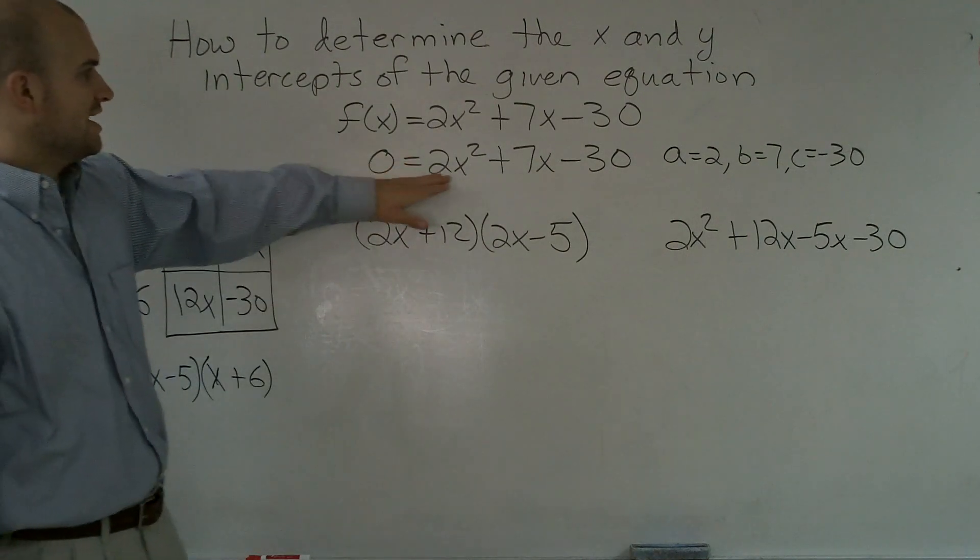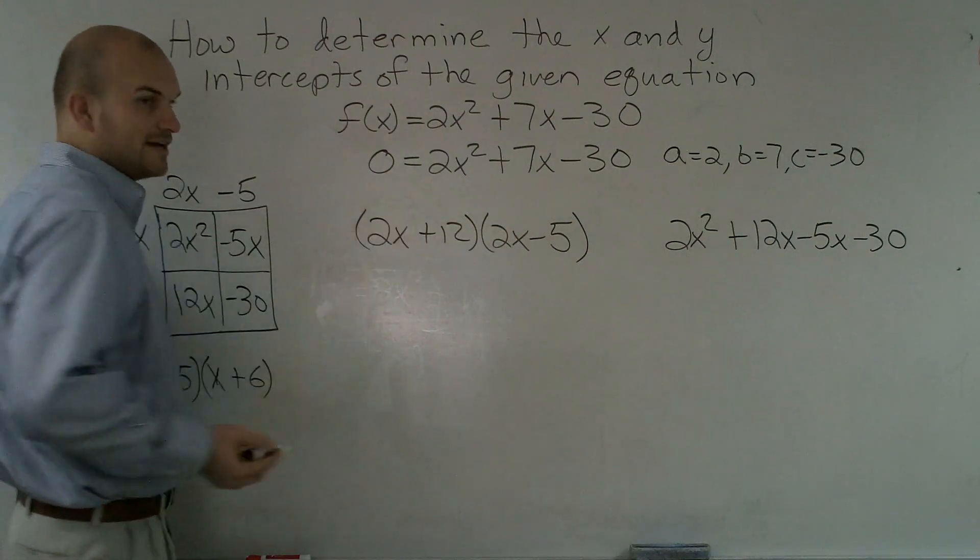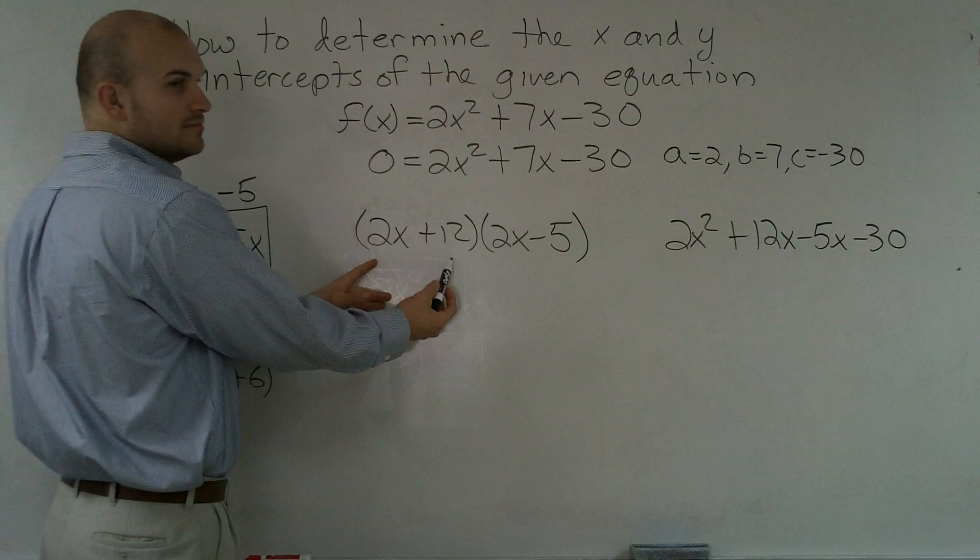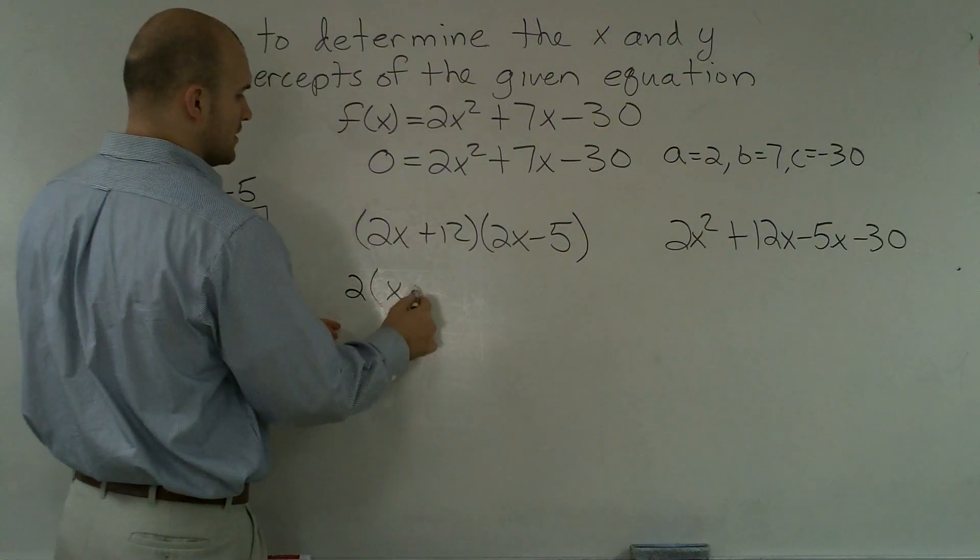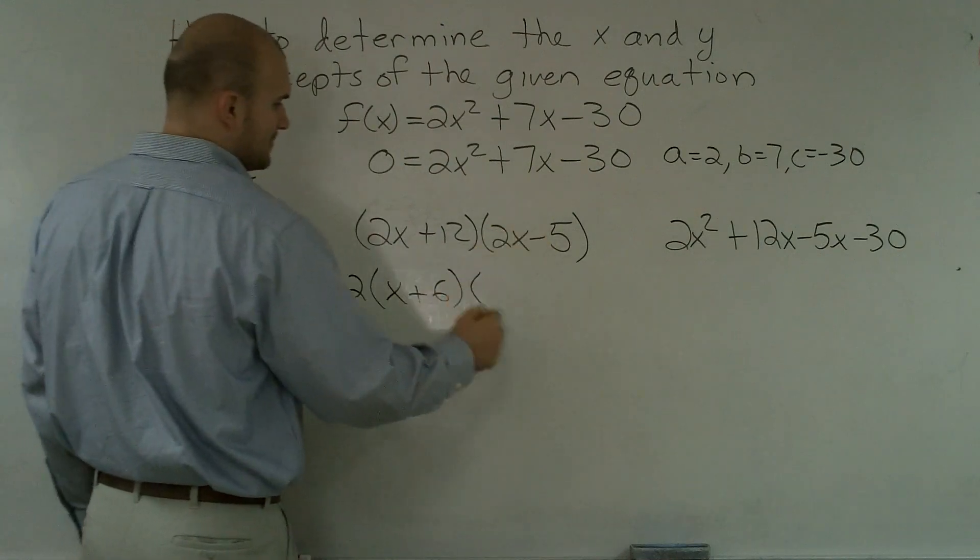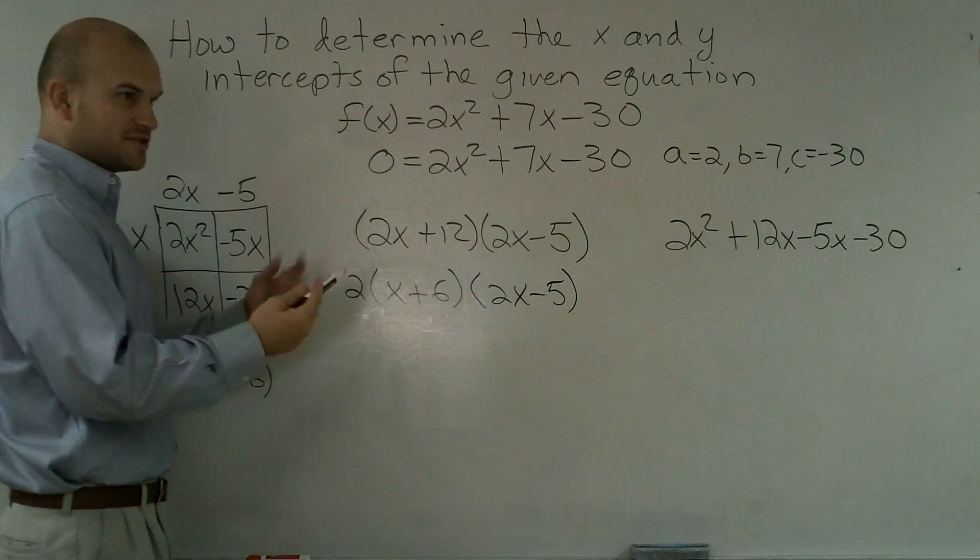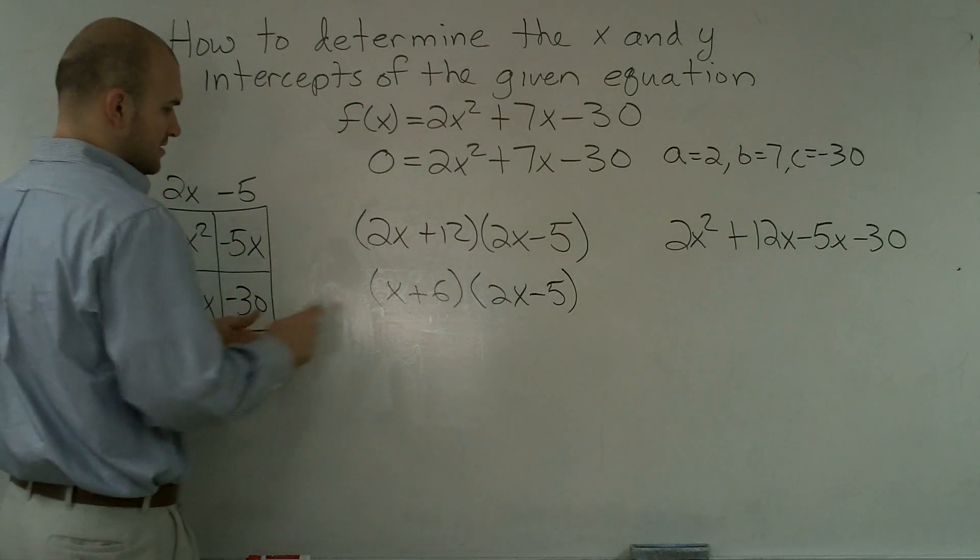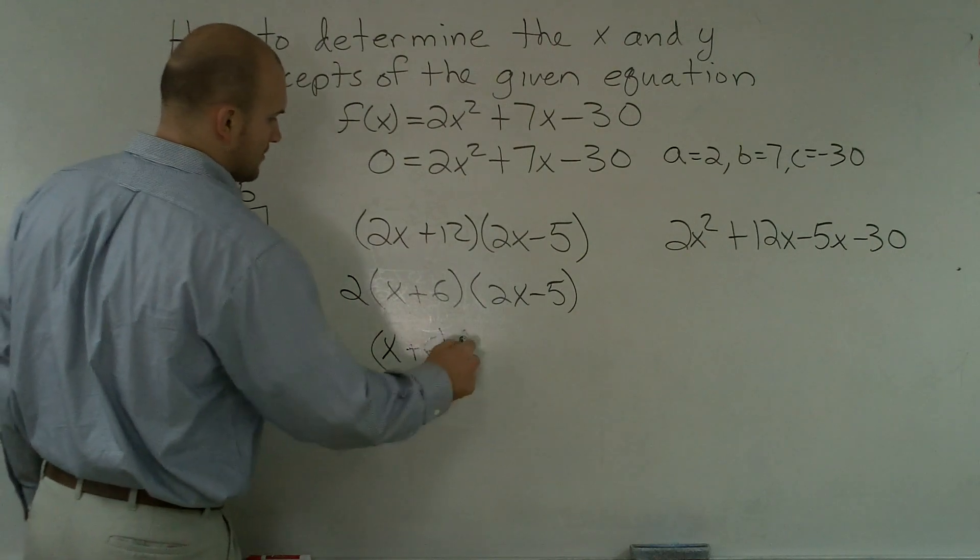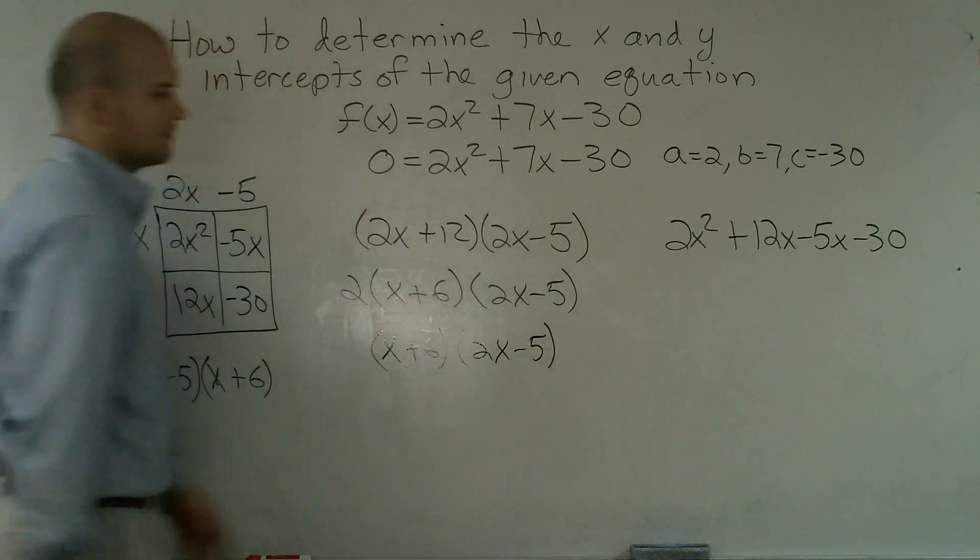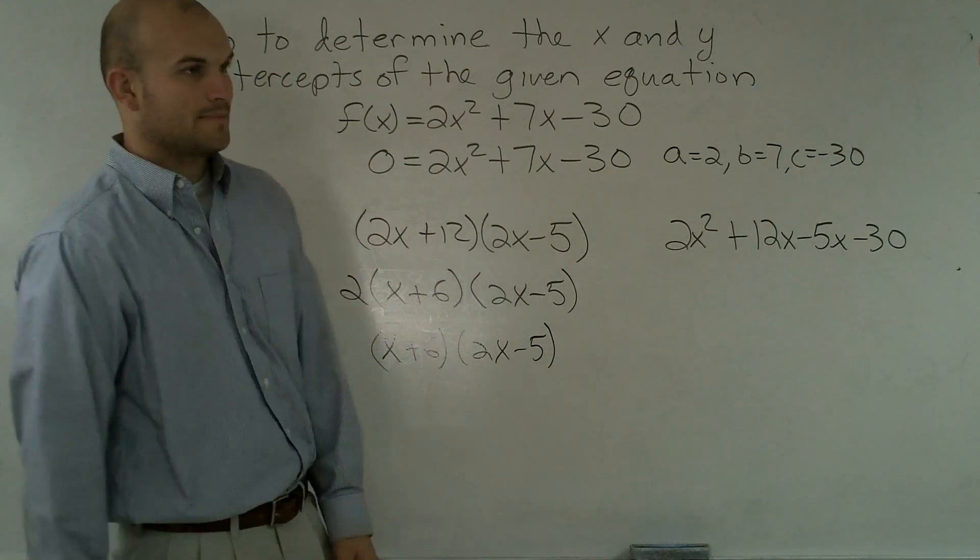Method number 2. You just go ahead and again take the a term, you put it in there, and then now I factor out my GCF. So what does this binomial have in common? It has a 2. So let's factor out a 2. So 2 times x plus 6. This has nothing in common. 2x minus 5. Since this is just a GCF, it's just a factor of everything. Actually, I'm not going to erase it. Let's just rewrite it. Method number 3. Method number 2.